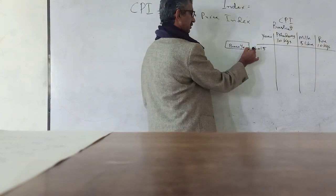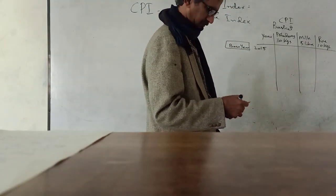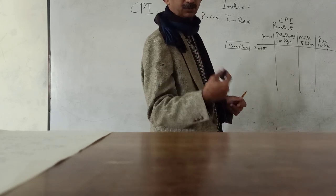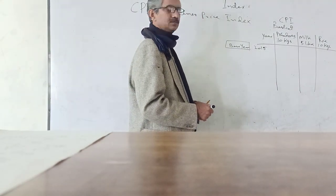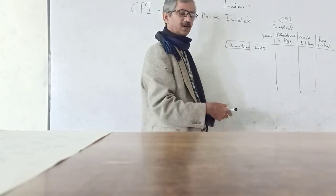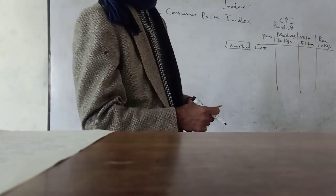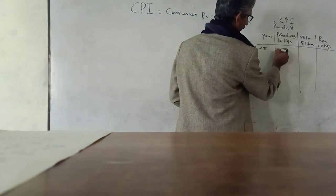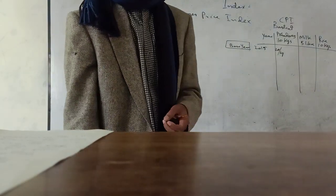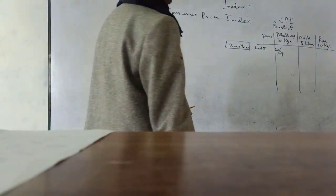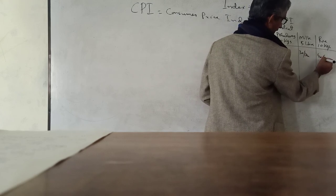As we have discussed, to measure indexes — whether inflation, GDP, or real GDP as discussed in previous lectures — we select a base year. The base year is the selected year we choose to compare its prices with other years' prices. In 2015, the price of potatoes is 20 rupees per kg, milk is 30 rupees per litre, and rice is 40 rupees per kg.